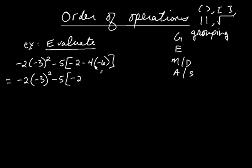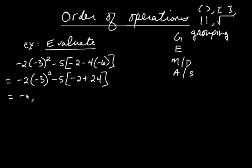There's one little cost of doing that: what was here becomes addition. I'm thinking of the negative as going with the 4, and in its place there comes an addition symbol. So negative 4 times negative 6 is positive 24. Now it's addition still within G: negative 2 plus 24 is 22. So negative 3 squared minus 5, and negative 2 plus 24 is 22. I need parentheses around 22 because there's still multiplication.